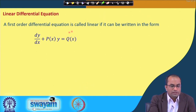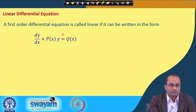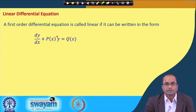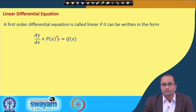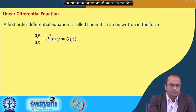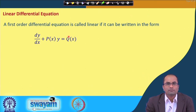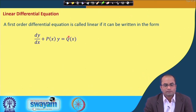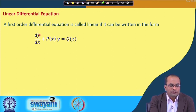Why do we call this linear? It is basically linear in y because dy/dx appears as a single term, and y also appears just alone — there is no product of y with y or with its derivative. So the equation is linear in y. The functions P and Q may have powers of x, such as x² or any other function, so there is no restriction on P and Q, but y must appear only as dy/dx and y itself.